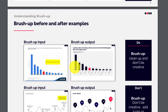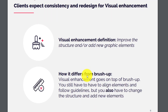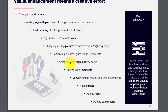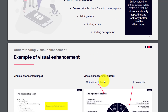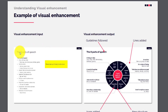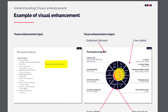Using colors to highlight key points means, for example, making one column red in a chart so the focus is on that particular column. You can also add visual elements, convert simple charts into infographics, add maps, icons, backgrounds, and much more to enhance the slide. An example shows an input slide about eight parts of speech that was transformed into a fully restructured output with guidelines followed, lines added, designs and icons added, and a new structure for explaining the eight parts.